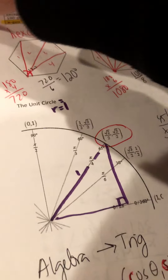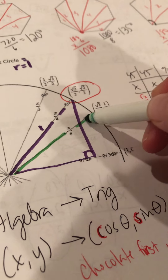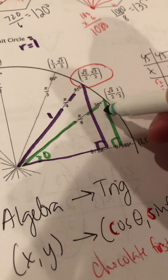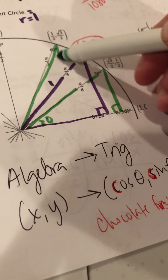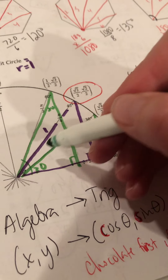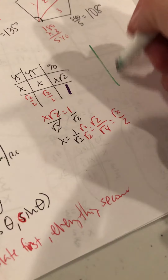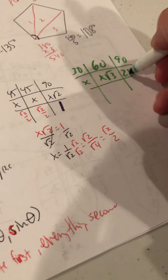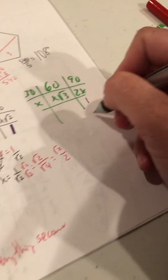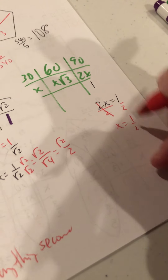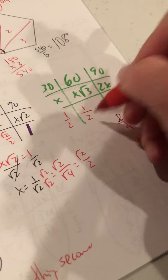For the 30-degree angle on the unit circle — this is the 30-degree angle, this is the right angle, so this would be 60. We could also flip it. Either way it's the same triangle. In a 30-60-90, the sides are x, x√3, and 2x — always make that middle one bigger. Again the radius is 1, so 2x = 1, meaning x = 1/2.